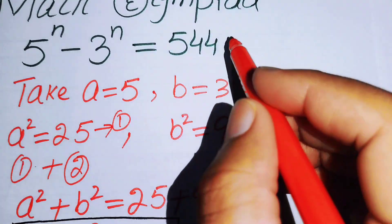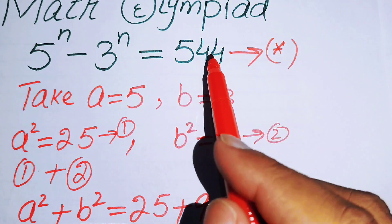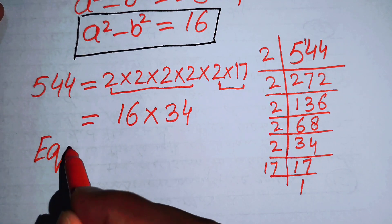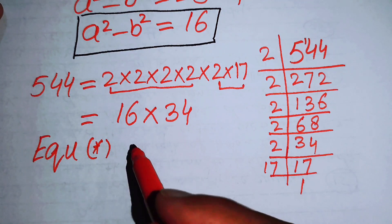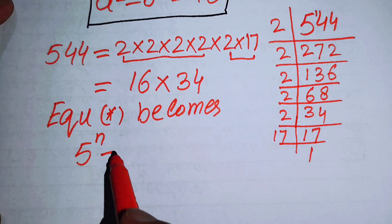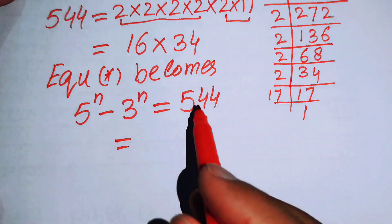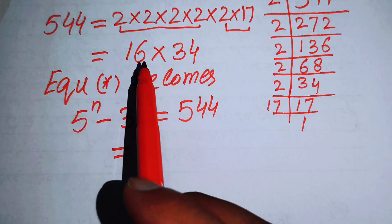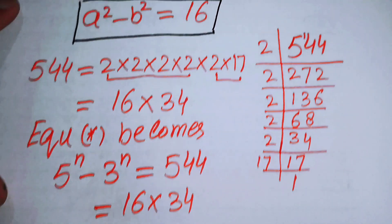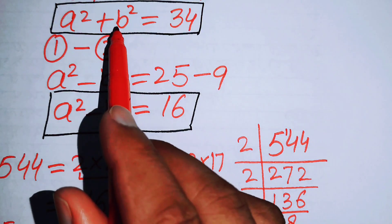We now replace 544 with 16 × 34 in our original equation. Notice that 16 equals a² − b² and 34 equals a² + b², so the right-hand side becomes (a² − b²)(a² + b²).